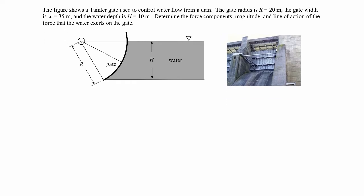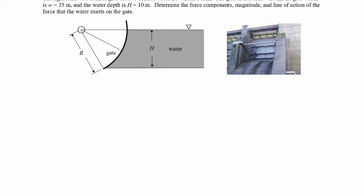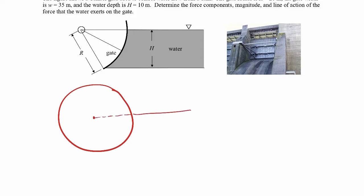Let's draw a picture and put a coordinate system on it. Here's our gate — it's part of a cylinder — with the center marked. Here's where the water is. We'll call this the x direction and that the y direction. We go out to some point on the gate at radius r, and call that angle theta. The free surface is right here. Out to that point on the gate we'll call that distance y, because it's depth y from the free surface.